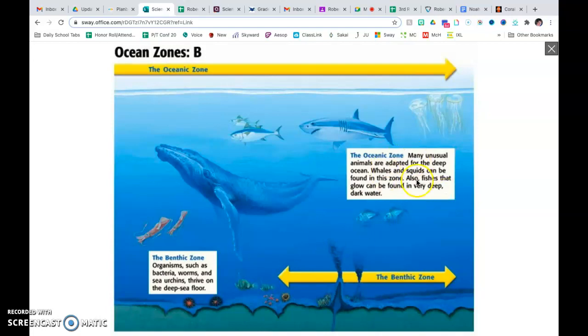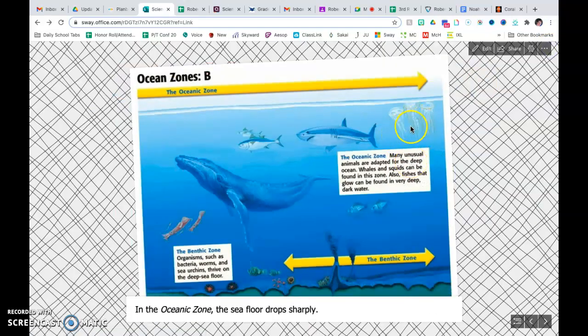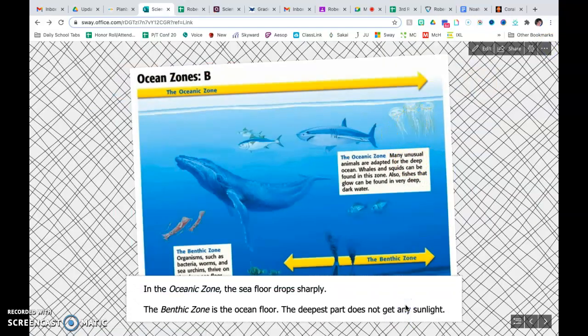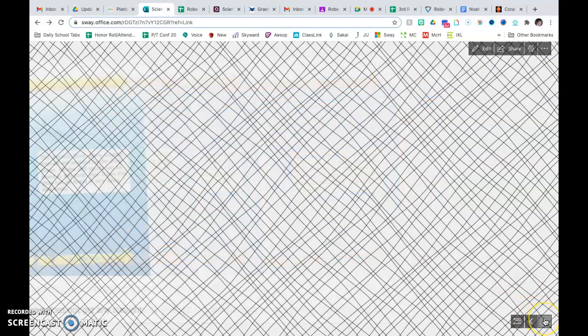As we move up, we have the oceanic zone. Remember where it drops off? You've got many unusual animals that are adapted for the deep ocean. Whales, squid, you can see the shark there, sea anemones. And then you have these fish that glow. They are found in very deep dark water. It's called bioluminescence. If you've ever been to the aquarium, you've seen these jellyfish. So those are the ocean zones.